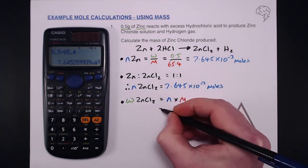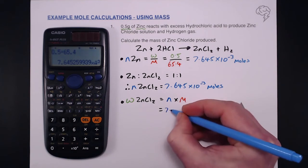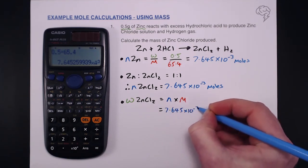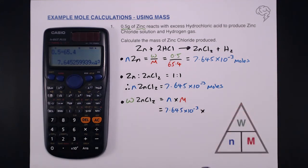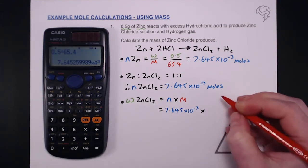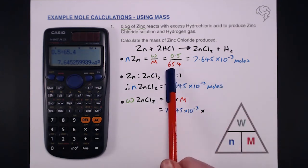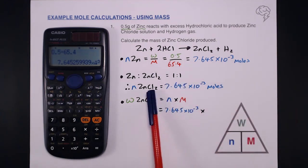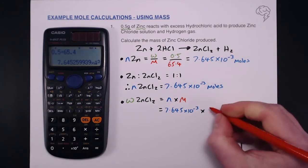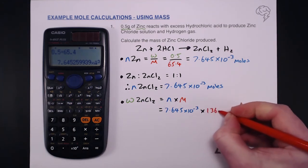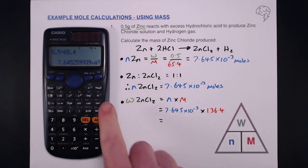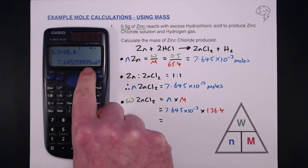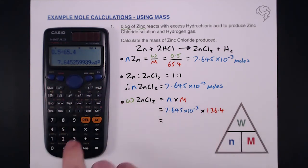That equals 7.645 times 10 to the minus 3, and that's multiplied by our molar mass of zinc chloride. So one zinc and two chlorines. That is 65.4 for zinc, two lots of 35.5, so that's 136.4 as our molar mass for zinc chloride. We've got this number, the accurate value already stored in our calculator, so we just multiply that by 136.4.